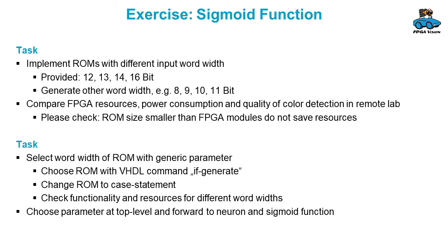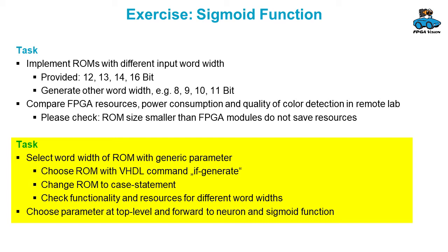In the code shown on the previous slide, we change the IP core. But it would be easier to select the word width of the ROM with a generic parameter. You can do this with the VHDL command if generate — have a look at the syntax in literature. Or you can change the ROM to a case statement. For verification, you should check the functionality and the resources used for different word widths. The best approach is to choose the parameter at the top level and forward the generic parameter to the neuron and the sigmoid function.